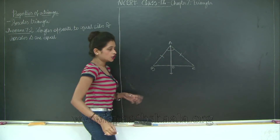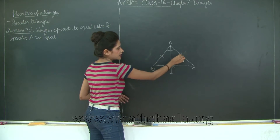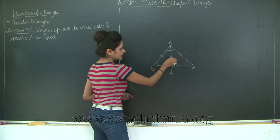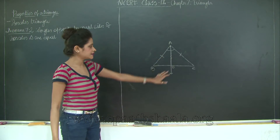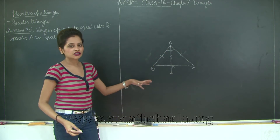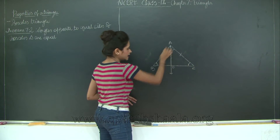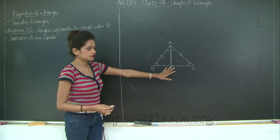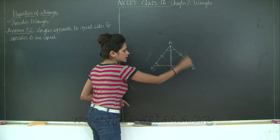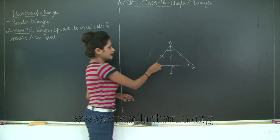Since AD is the bisector of angle A, angles BAD and CAD are equal. Now if you take the two triangles BAD and CAD, you have two sides equal (which is given), equal angles because AD bisects angle A, and AD is the common side. Therefore triangles BAD and CAD are congruent by the SAS test - side, angle, side. Once you prove the two triangles are congruent, you can say angle ABC is equal to angle ACB, corresponding parts of congruent triangles. These are the angles opposite to the equal sides.